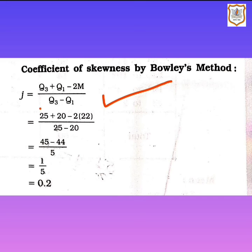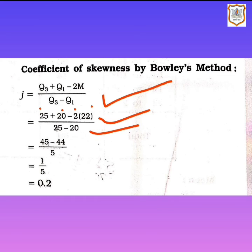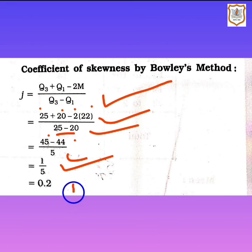Substituting: Q3 = 25, Q1 = 20, median = 22. So J = (25 + 20 − 2×22) / (25 − 20) = (45 − 44) / 5 = 1/5 = 0.2. Therefore J = 0.2.